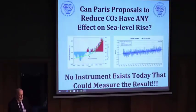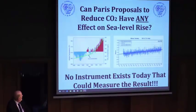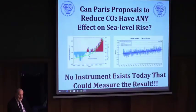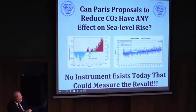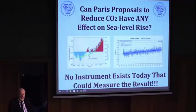This is the Paris proposals. We're going to reduce CO2 worldwide. If we have a 38% increase in CO2 that is not detectable in sea level, how would a 1% or 2% reduction ever be measured? We don't even have an instrument that could measure that. If we can't measure a signal of 38% in this line right here, forget the Paris proposals. The disasters most people are talking about are sea level rise — it just isn't going to happen.